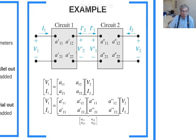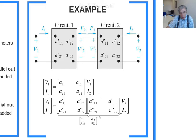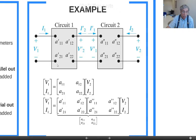If you connect those two in cascade, you have a new two-port circuit. This new two-port circuit's transmission parameters are equal to the multiplication of the first two-port circuit's transmission parameter matrix multiplied by the second circuit's transmission parameter matrix. If you do this multiplication, you get the new two-port circuit definition relation.